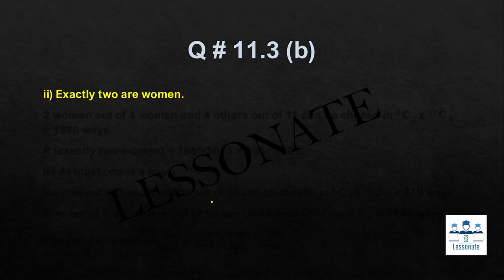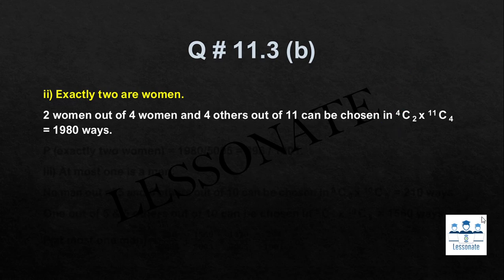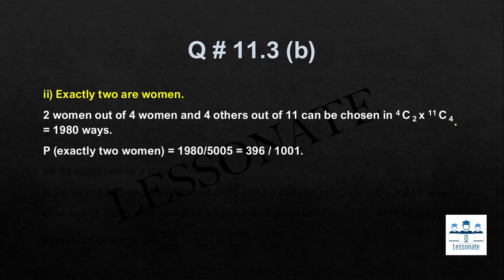Next part: exactly two are women. We choose 2 women from 4 and the remaining 4 persons from the other 11 members. The combinations are C(4,2) × C(11,4) = 6 × 330 = 1980. The probability is 1980/5005.